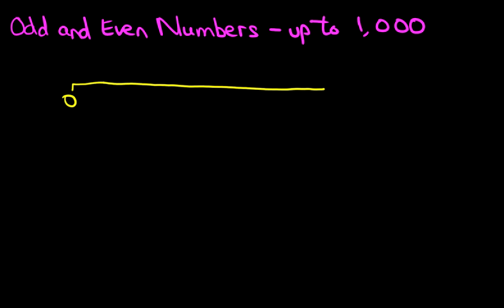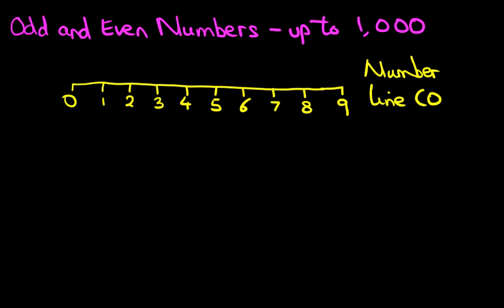The reason why we're doing the number line again is to make sure that we fully understand it and something that you can do yourself if you happen to forget the odd and even numbers. So there is our number line from 0 to 9.